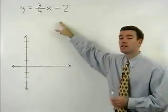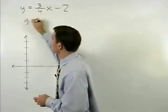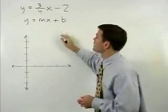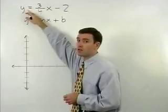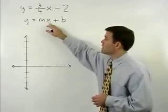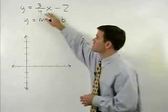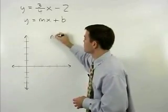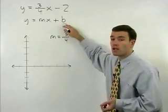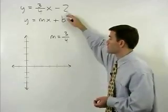We know that this line is in slope-intercept form, or y equals mx plus b, because y is by itself on one side of the equation. Our slope, or m, is the coefficient of the x term, which in this case is three-fourths. Our b, or y-intercept, is the constant term, which in this case is negative two.